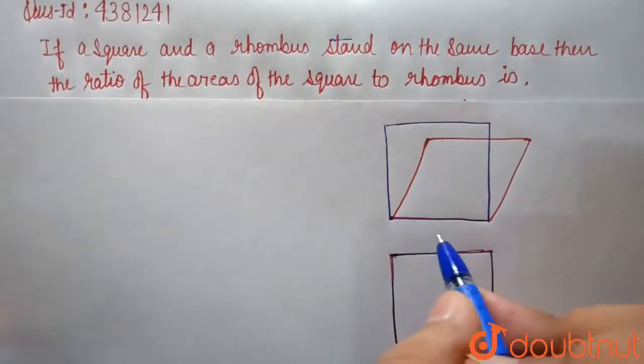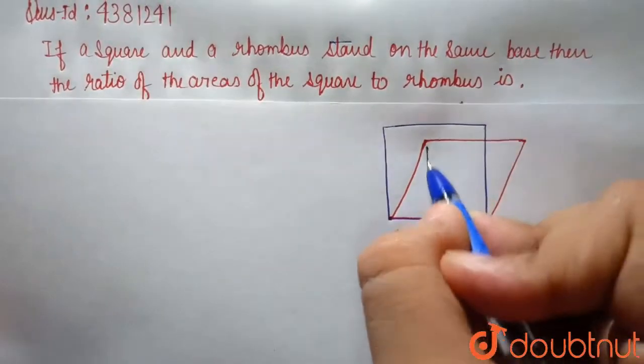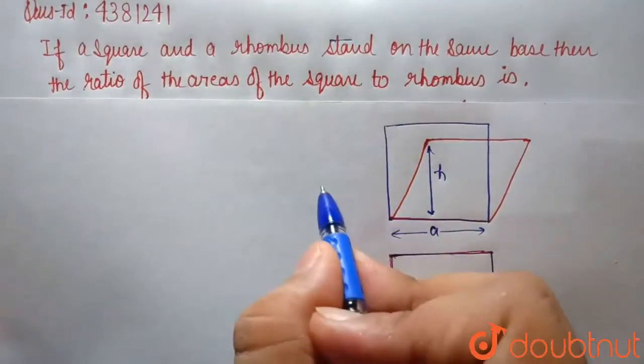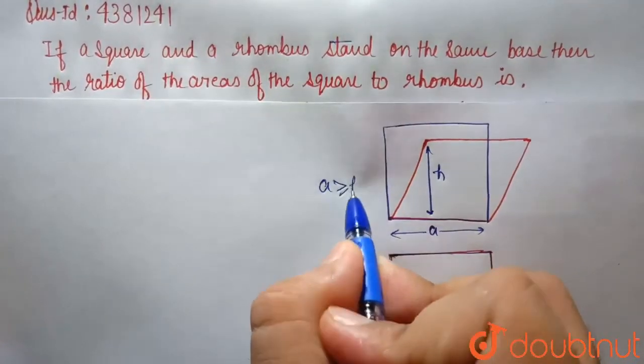Let's label this. The side is A and here is the height H. Now we have to know that A is always greater than or equal to H.